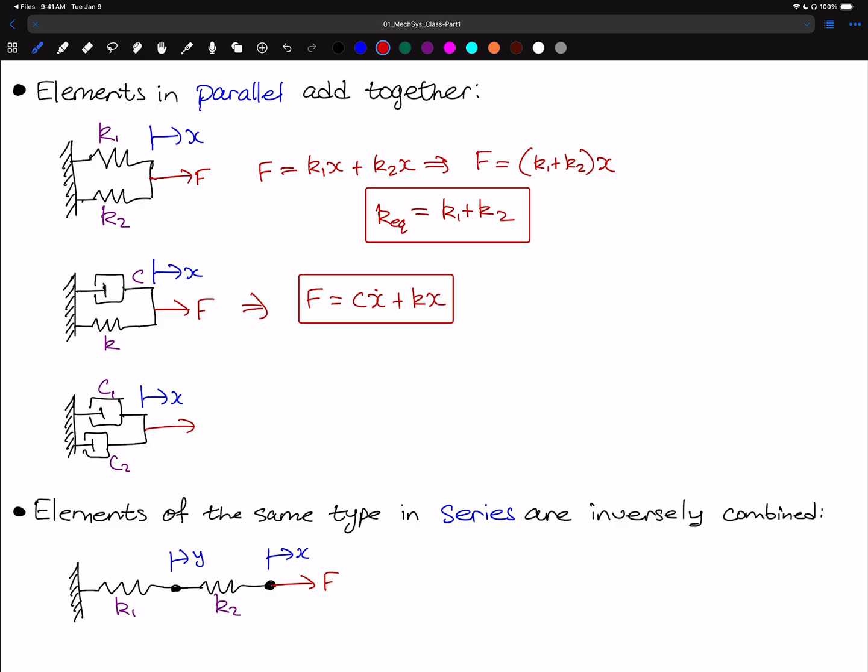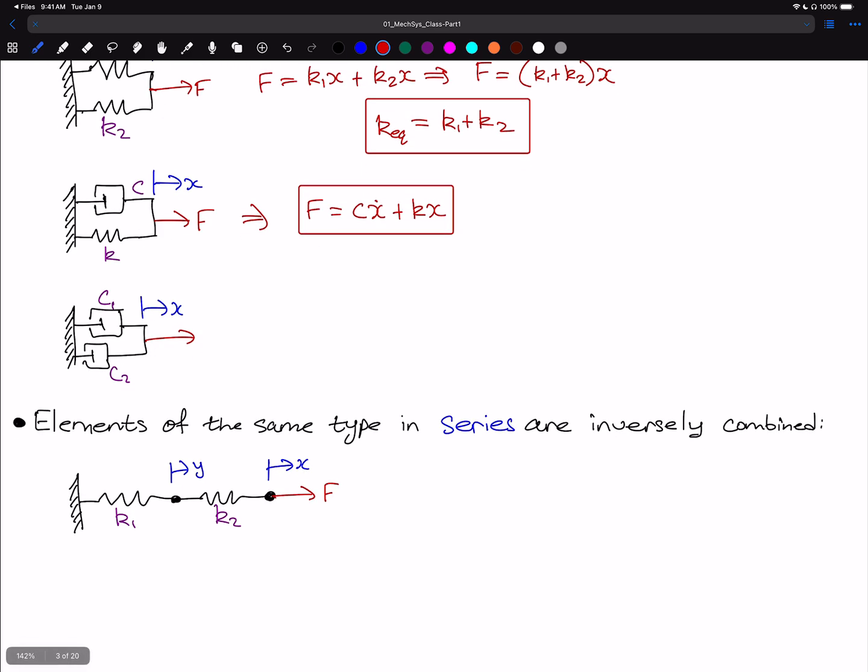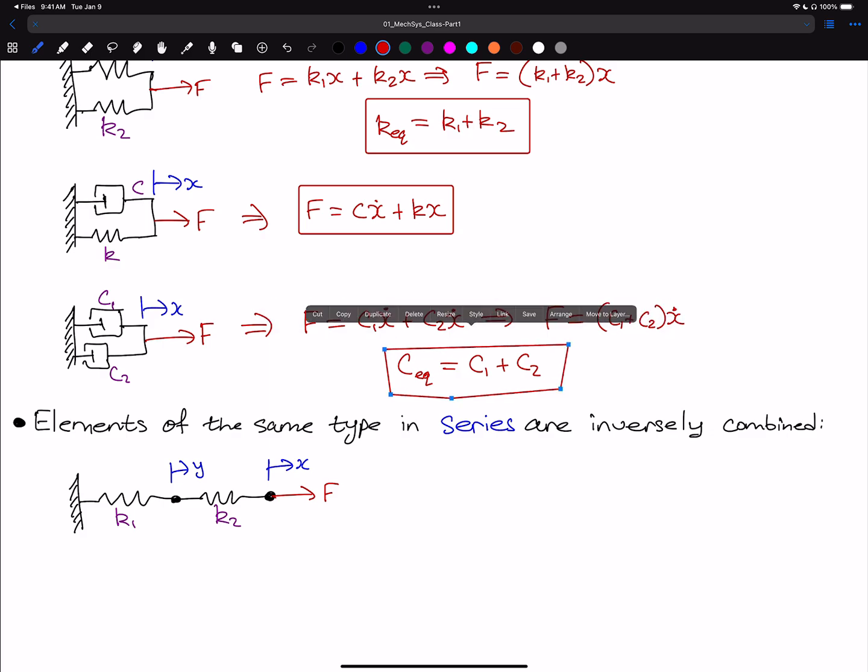If we have two dampers in parallel, it's going to be very much the same as the spring case. The force is equal to C1 times X dot plus C2 X dot, such that the force equals the quantity C1 plus C2 times X dot. We can write that the equivalent damping coefficient C_eq is equal to C1 plus C2.